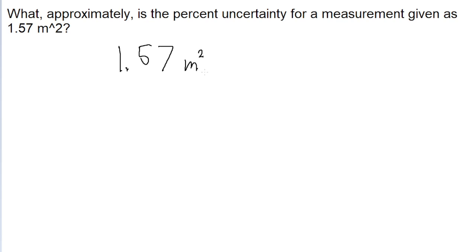This is kind of a strange problem because most of the time when we're looking at measurements, we're looking at how the measurement was made to determine how much uncertainty there is. But in this problem, we're not given any information about any of that. We're just given the measurement and asked to find the uncertainty.